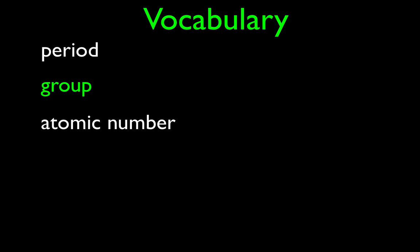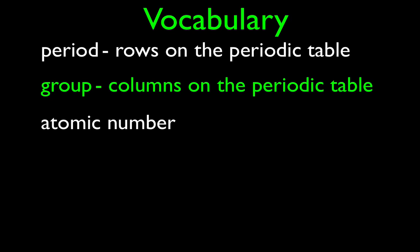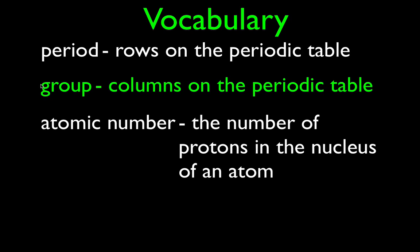Let's go over some quick vocabulary. The periods on the periodic table — the periods are the rows, each row is a period. The groups on the periodic table — each column is a group. And then the atomic number: the atomic number is the number of protons in the nucleus. Each element has a different number of protons, so the atomic number tells us what kind of atom it is.